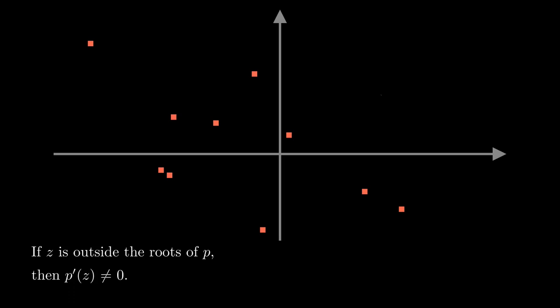And here is a blue dot, which is representing a point z. And certainly from the picture, it looks like that point z is outside of the red points. But what does that actually mean?